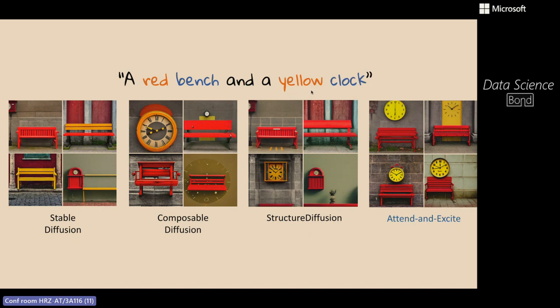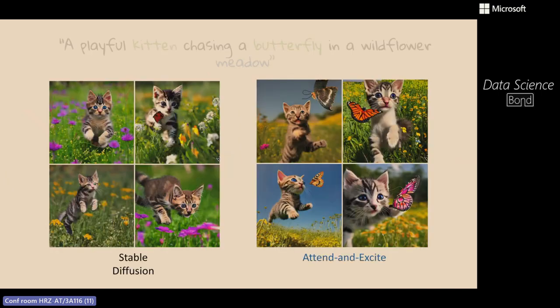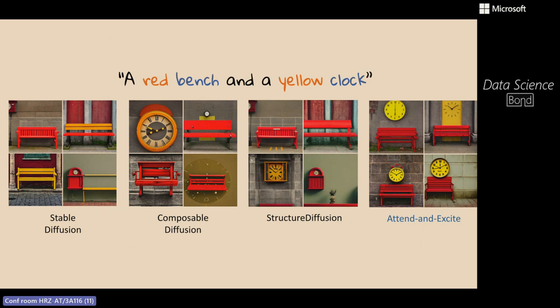Why does Stable Diffusion mix up attributes if the information is already in the transformer? The model just ignores whatever is easier to generate — it doesn't pay enough attention to each subject, or ignores subjects entirely. When it neglects the subject itself, the attention value is close to zero. When it neglects other parts related to the subject, the attention can be non-zero but low — like 0.2, 0.3, or 0.4.